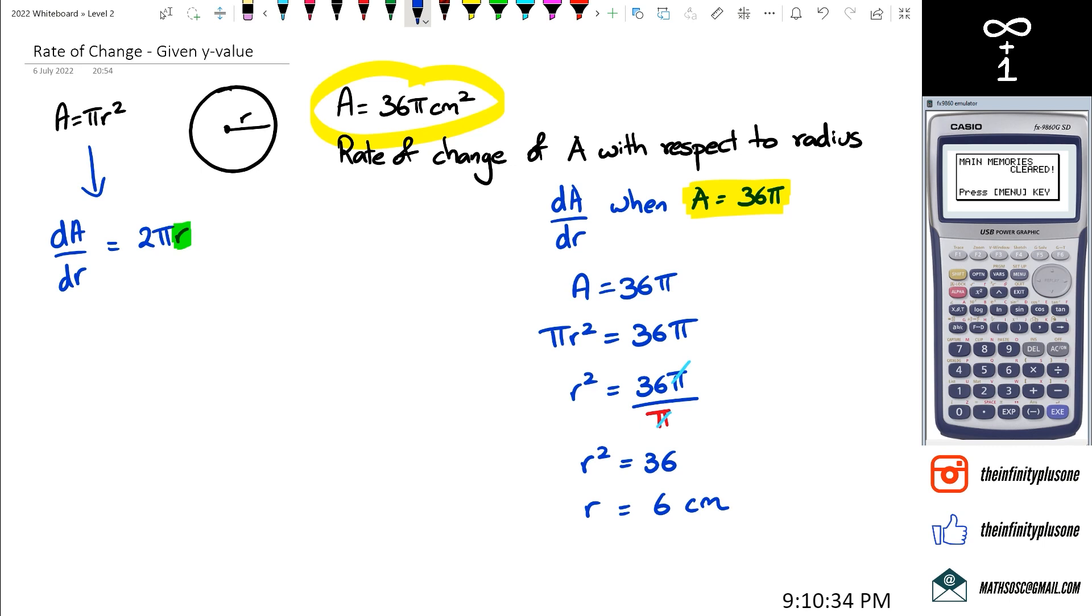So now that we actually have our radius, we can now go back to dA dr and substitute radius of 6 to find out what the rate of change of A with respect to radius is. So we're going to get dA dr is equal to 2 pi r. So now we know that radius is equal to 6 centimeters. So we're going to put that as 6. And when we actually put this together, we actually get 12 pi.